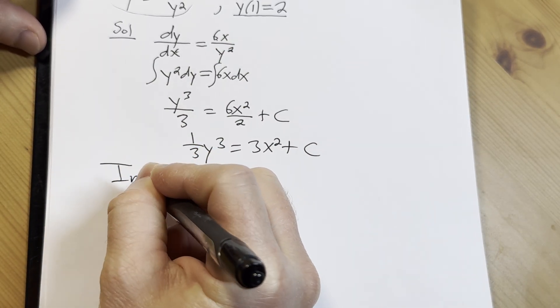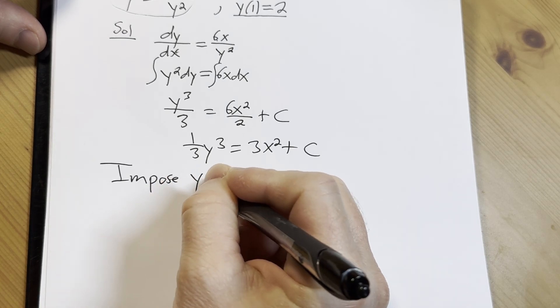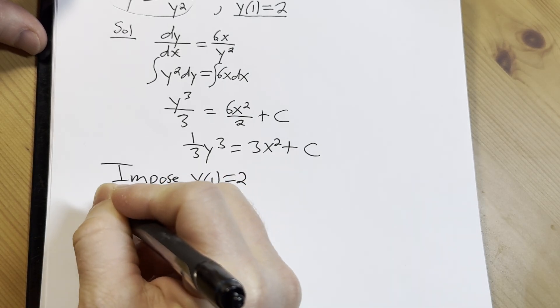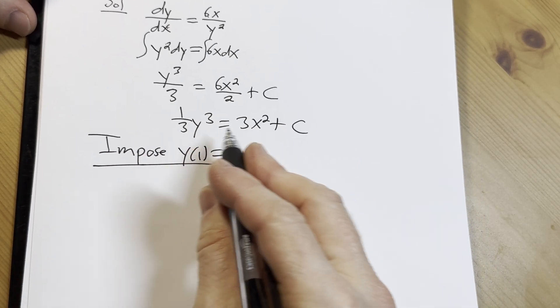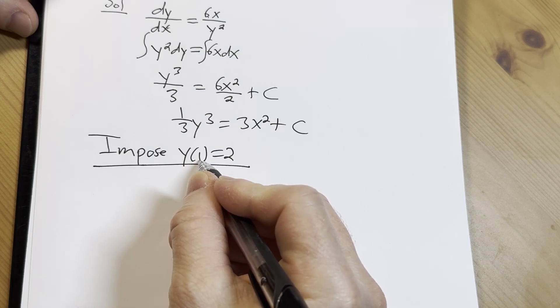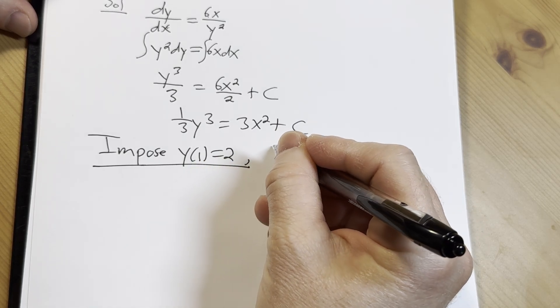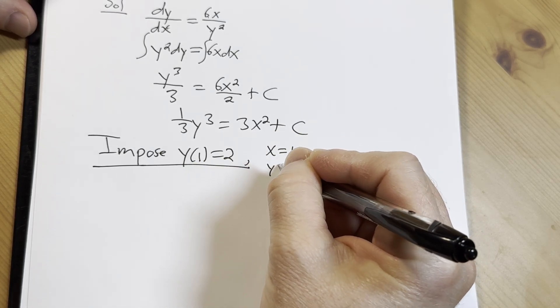So let's go ahead and impose the initial condition y of 1 equals 2 on our equation here. So when x is 1, y is 2. So this means when x is 1, y is 2.